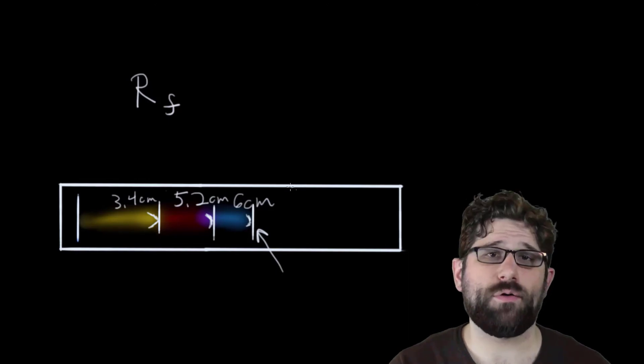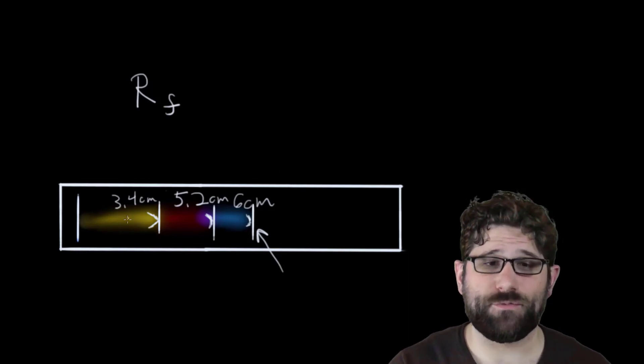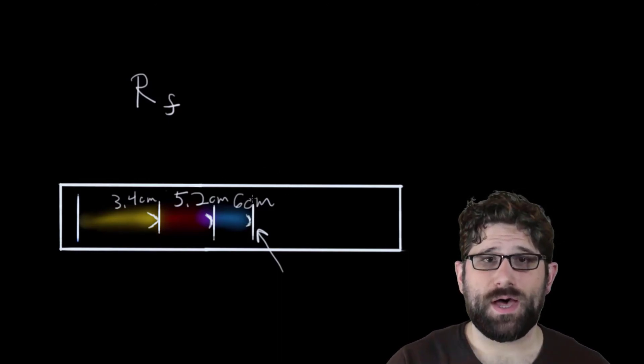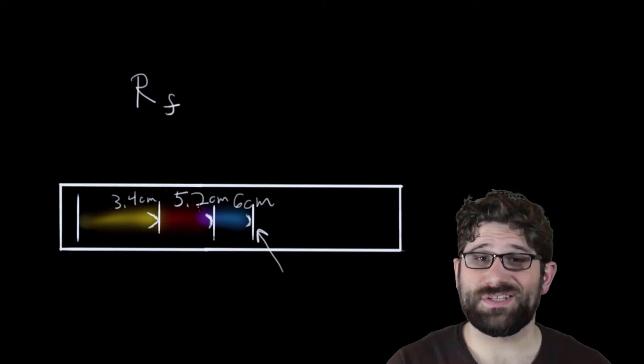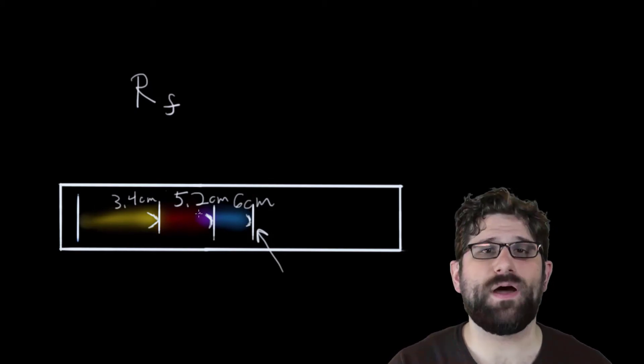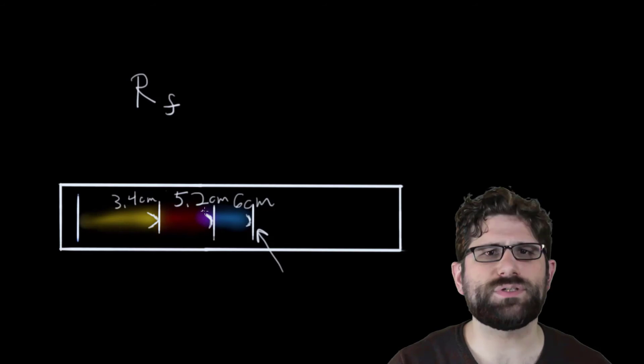In order to figure out my RF values for each of these pigments, I'm going to take the distance that the pigment traveled divided by the distance that the solvent traveled. It's as easy as that.